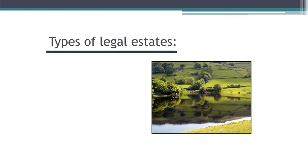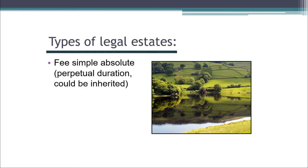A person who held land in this system might hold one of two main types of legal estates. The first, what we'd call today a fee-simple-absolute — an estate of perpetual duration that would last indefinitely in the future and could be inherited by the holder's heirs when he or she died. The other kind of main estate was the life estate, which would end when the holder passed away.